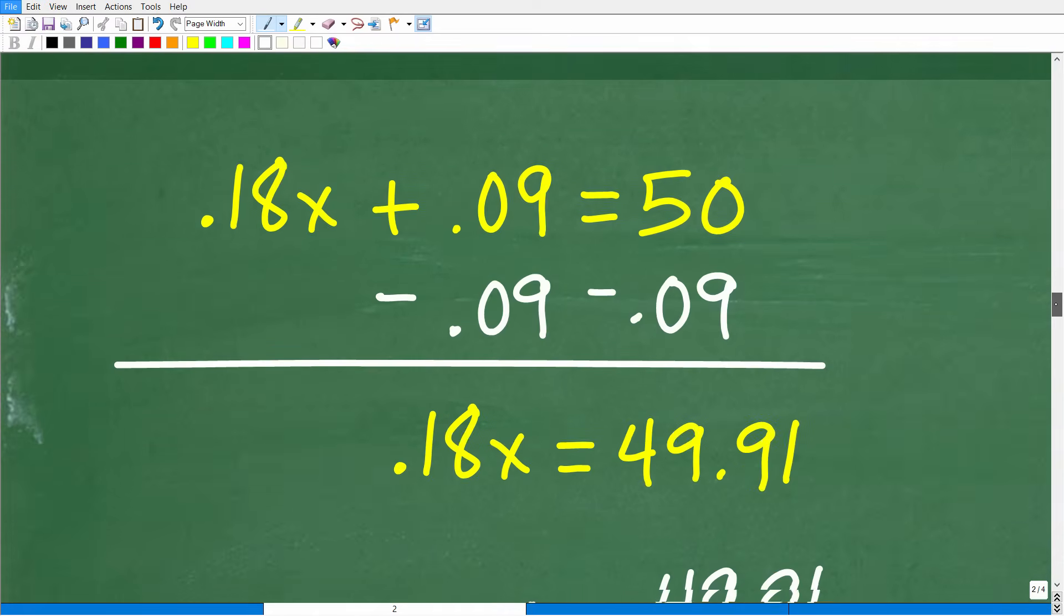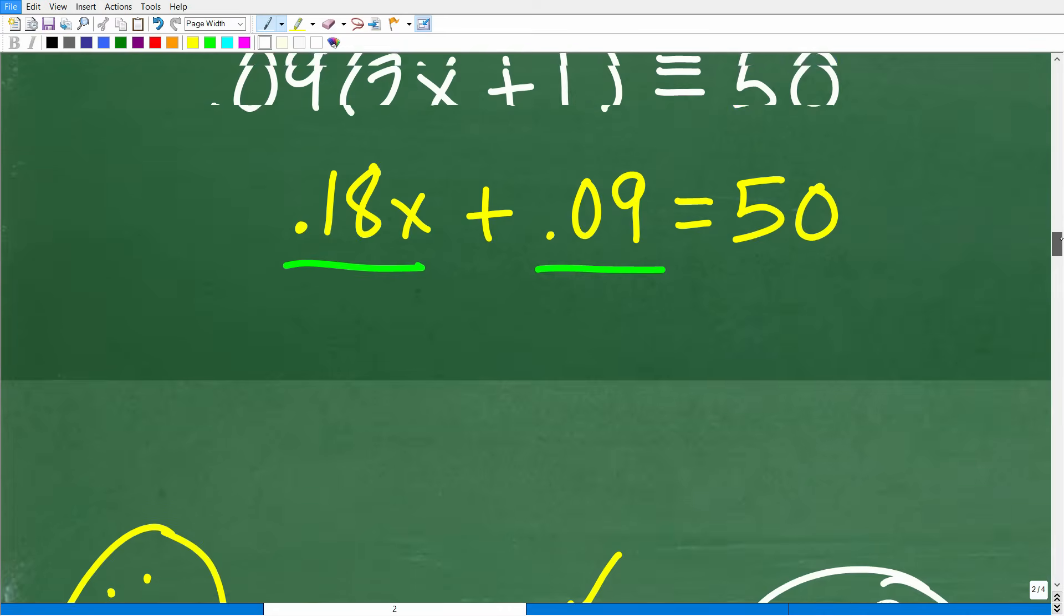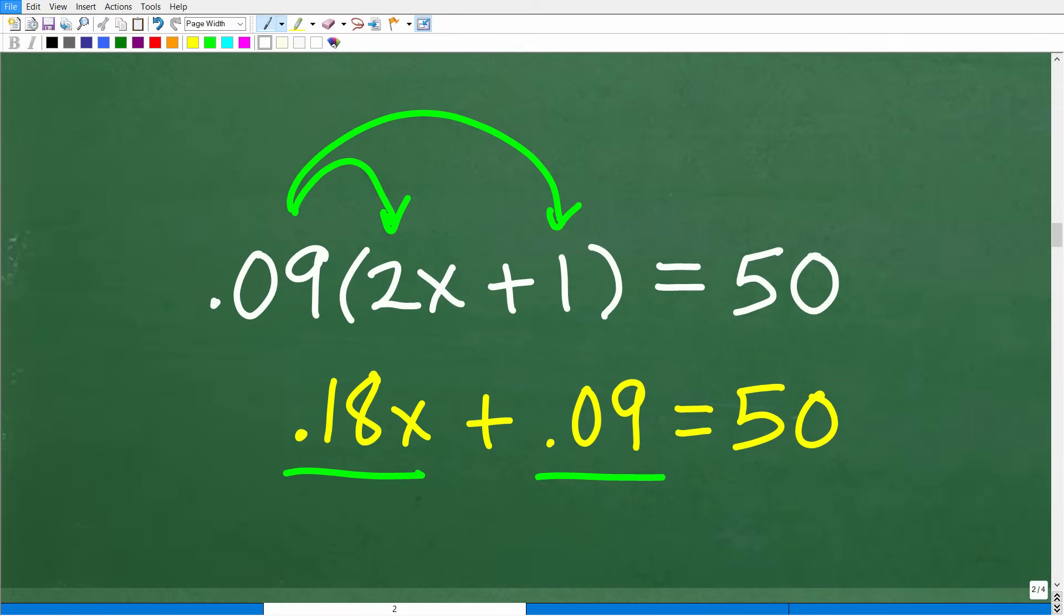Let's go ahead and solve this equation. We have 0.18x plus 0.09 is equal to 50. Let me back up here. Here is our actual equation - we have 0.09 times 2x plus 1 is equal to 50. This is 9% of 2x plus 1 is 50. We use the distributive property to multiply 0.09 times 2. We're using our calculator. 0.09 times 2 is 0.18x, and then 0.09 times this 1 is 0.09 equals 50.